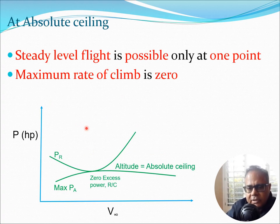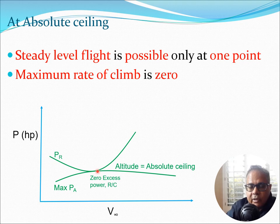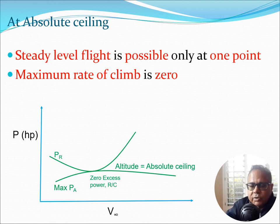At the absolute ceiling, steady level flight is possible only at one point. Since the rate of climb is zero, the only thing you can do is fly in steady level flight. So if you were to encounter a mountain suddenly, the pilot cannot send the aircraft into a climb because there is no margin of available power — the difference between available power and power required is simply zero at this location. Theoretically speaking, the maximum rate of climb is also zero at this point.